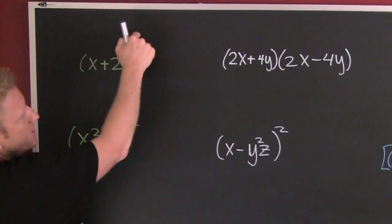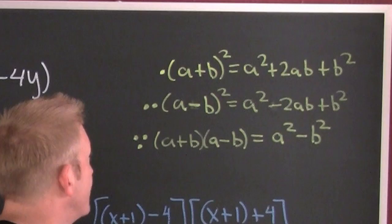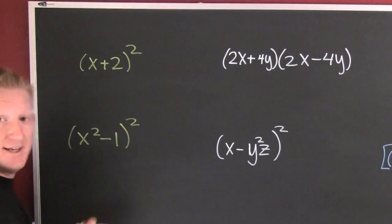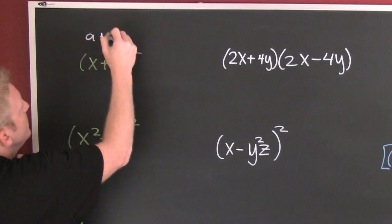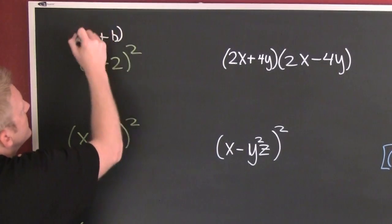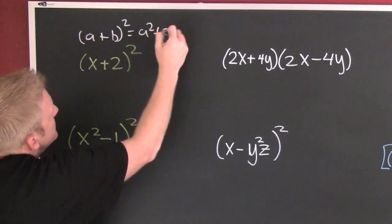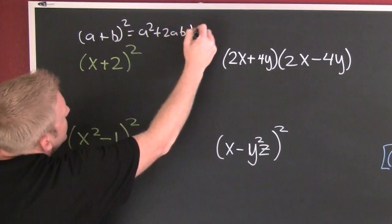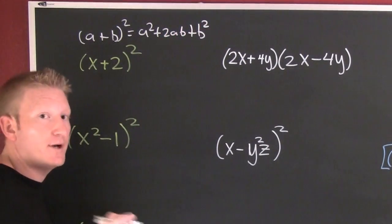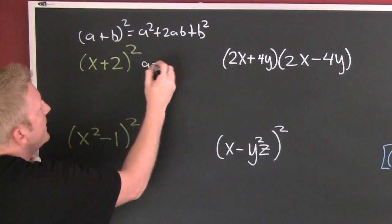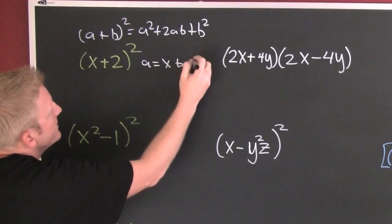We have x plus 2 squared. Which one is that? It does appear that we have a perfect square. If this was a plus b squared, we know that to be a squared plus 2ab plus b squared. What's my a? My a is x and my b is 2.